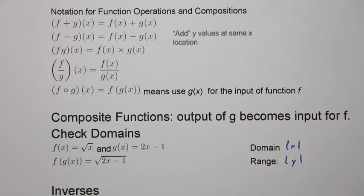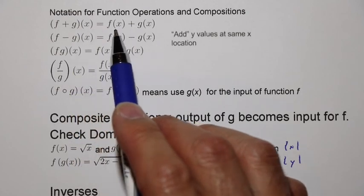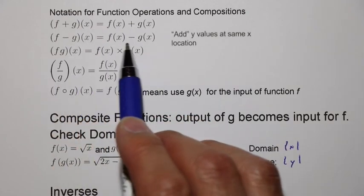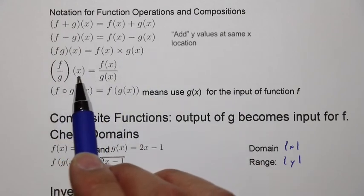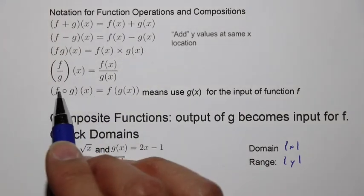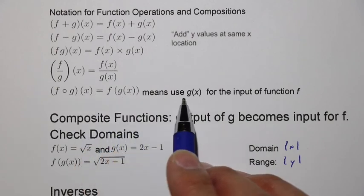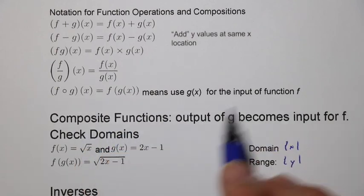Okay, we're studying function operations, so we should be familiar with all this notation. f plus g of x equals the y value of f plus y value of g. f minus g in brackets x is the y value of f minus the y value of g. fg means f of x times g of x. f over g of x means f of x divided by g of x. And here we have this fog. f composed of g of x means g of x, the output of g of x, is used for the input of f.